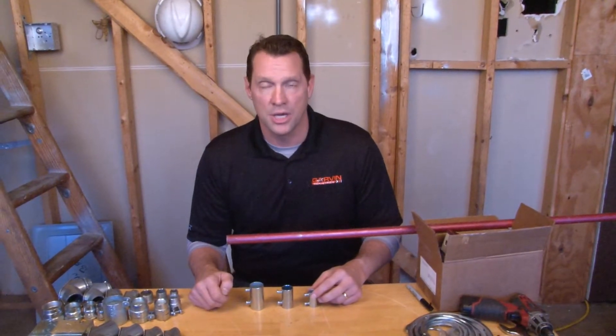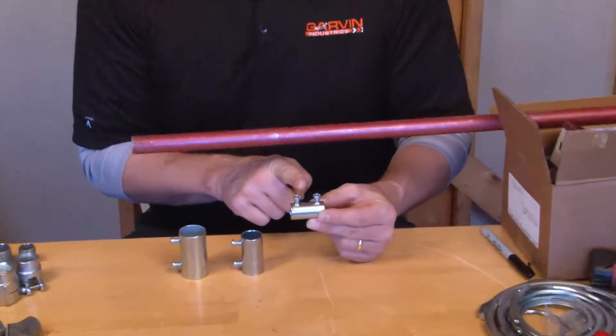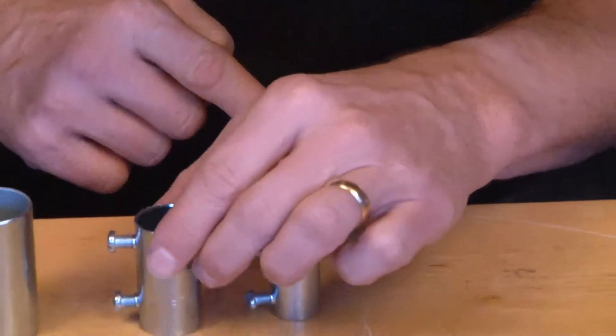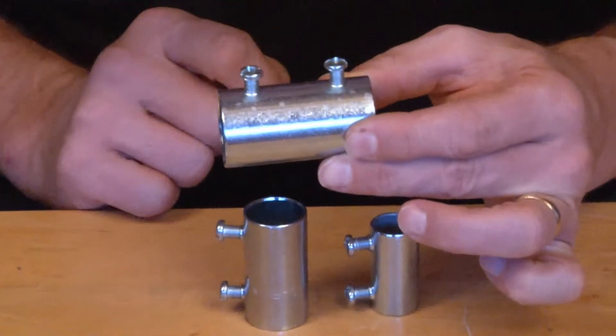Garvin Industries slip couplings are made to slide along EMT conduit. They're made in a half-inch EMT size, three-quarter-inch EMT, and also for one-inch EMT.